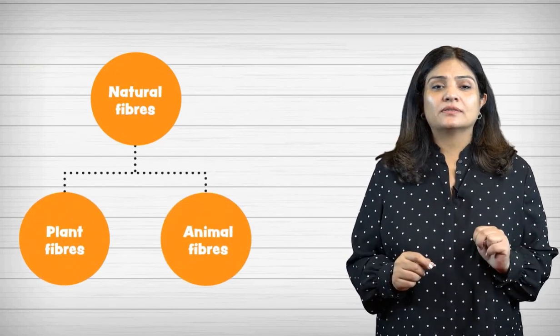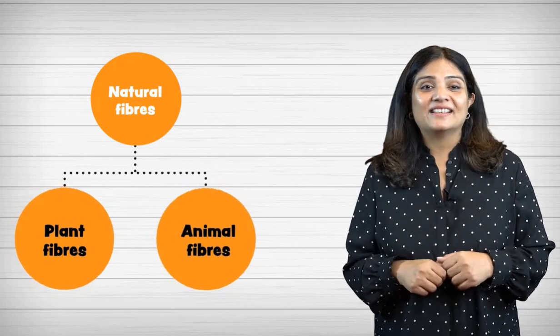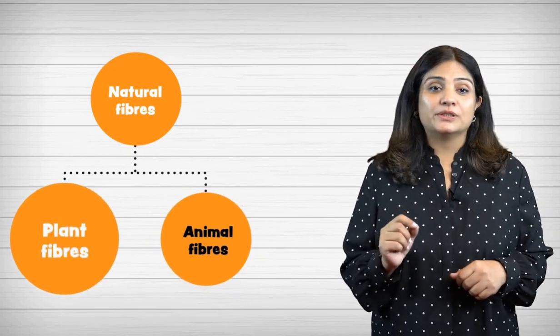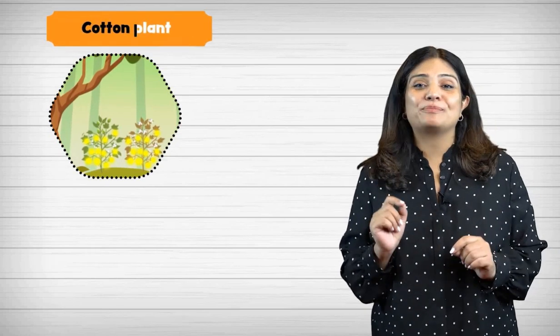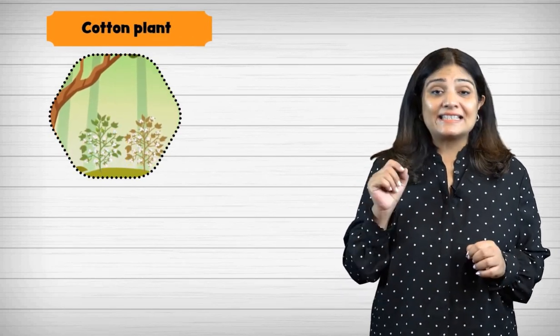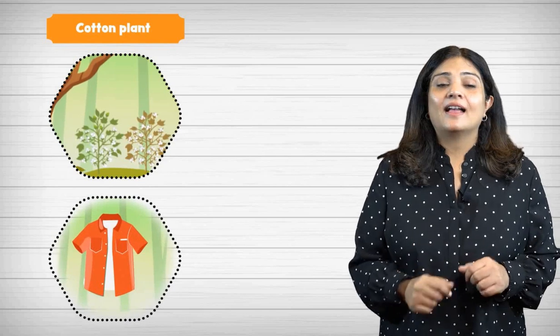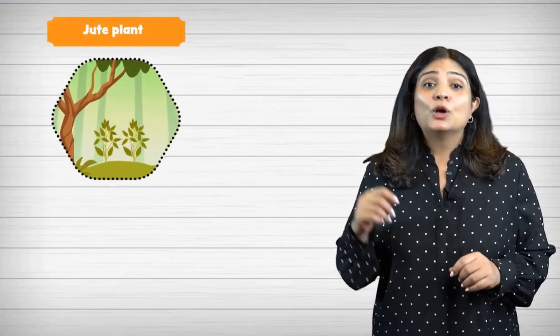Natural fibers are of two types: plant fibers and animal fibers. One example of plant fibers is cotton. Cotton is collected from the hairy seeds of the cotton plant and is then used to make fibers. Another example of plant fibers is jute.